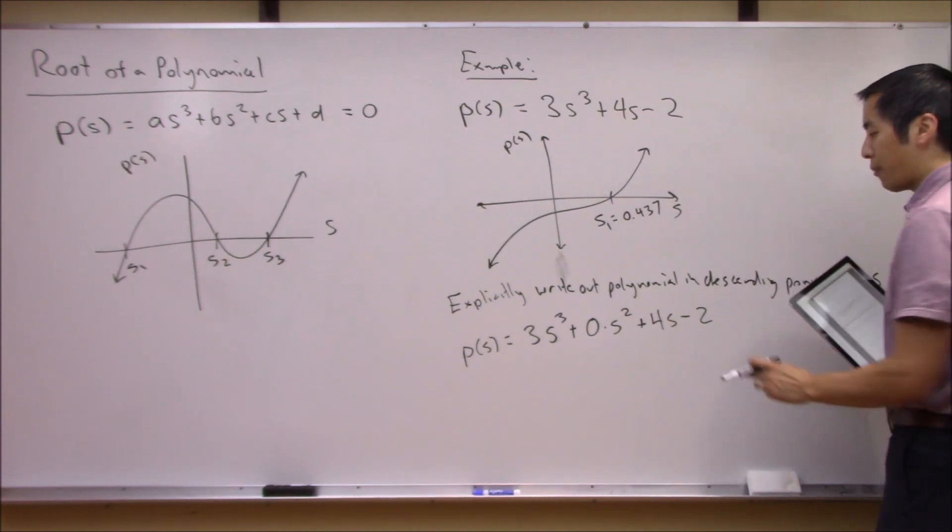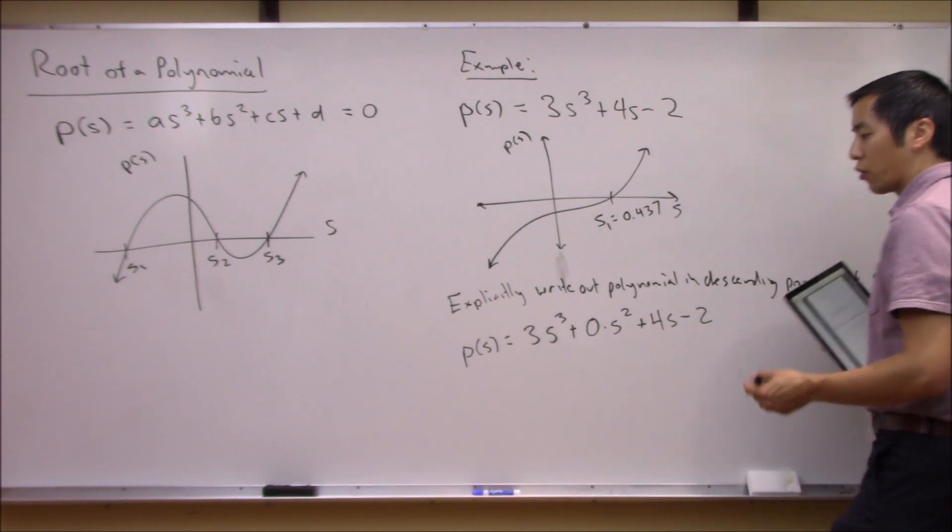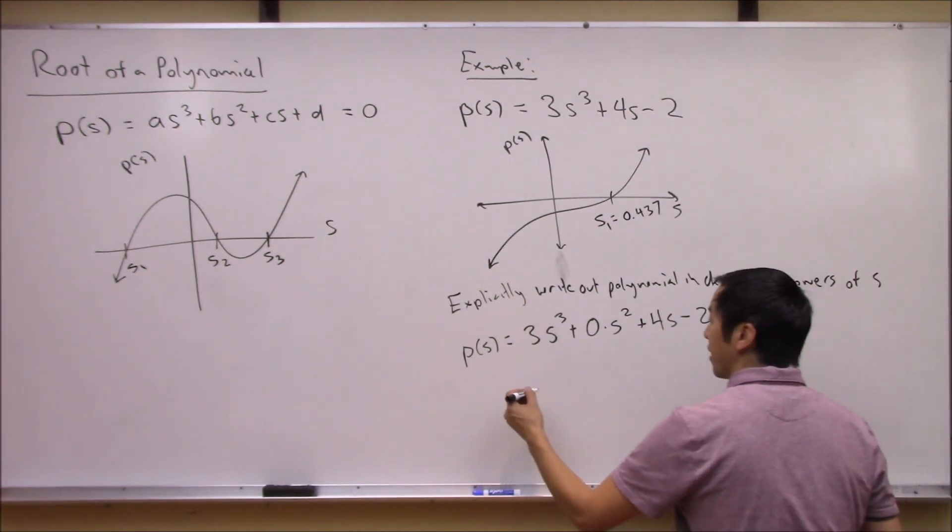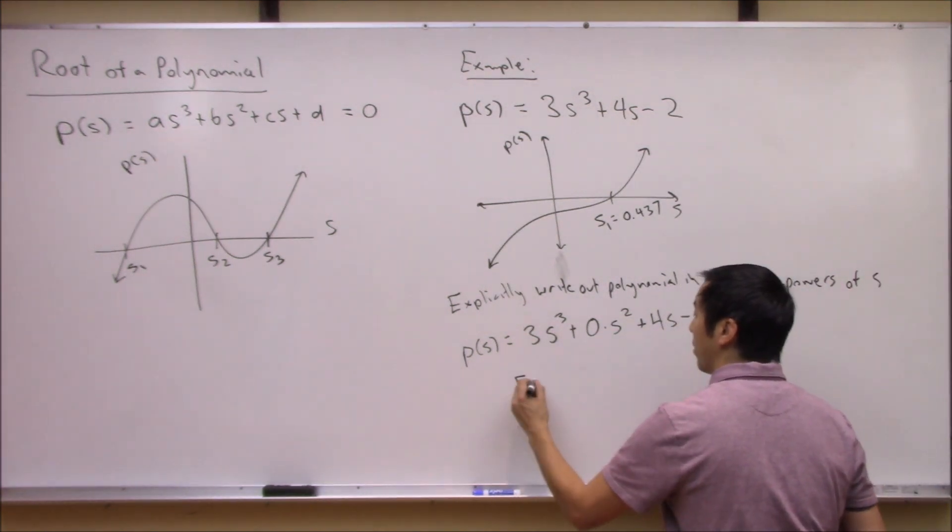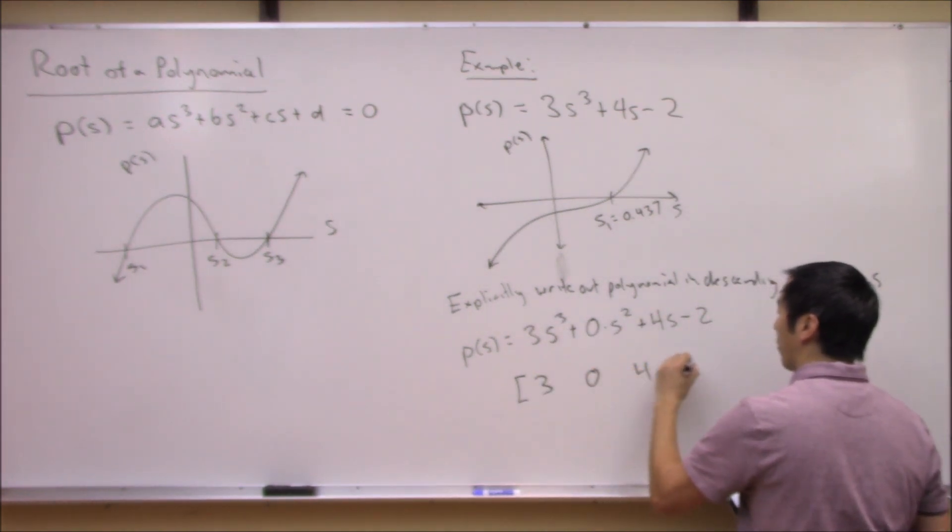Now what we're going to do is let's jump over to MATLAB and we need to tell MATLAB this is the polynomial I want to solve. So the way we're going to do this is we're going to define this as an array in MATLAB with the coefficients of s in descending order. So I got a 3, 0, 4, -2.